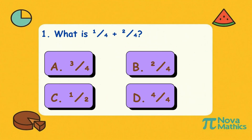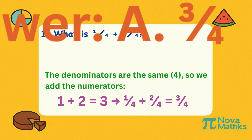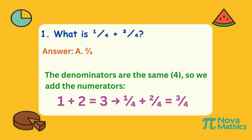One. What is one-quarter plus two-quarters? The bottom numbers are the same, so we add the top numbers. One plus two equals three. That makes three-fourths.